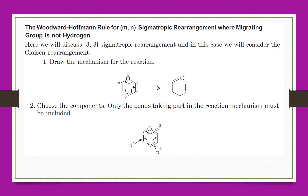So we are coming to an example. The Woodward-Hoffmann rule for an M,N sigmatropic rearrangement where the migrating group is not hydrogen. Here we will discuss 3-3 sigmatropic rearrangement, and in this case we will consider the Claisen rearrangement.